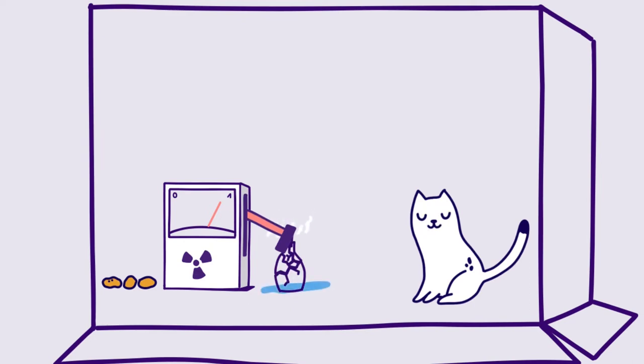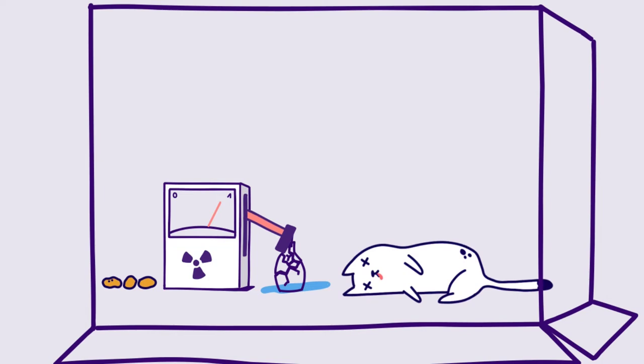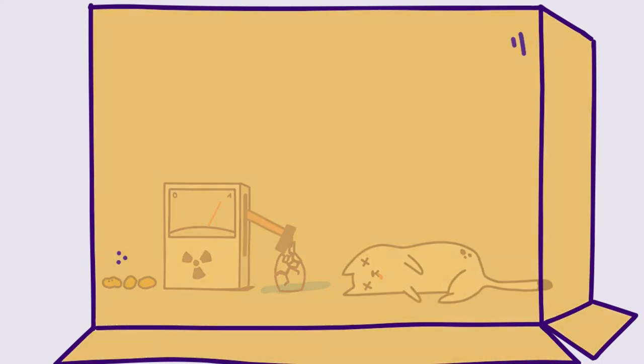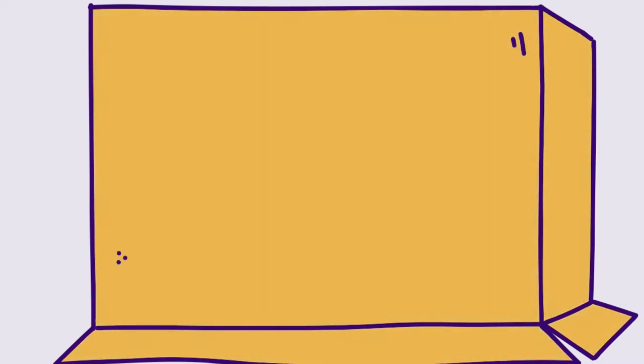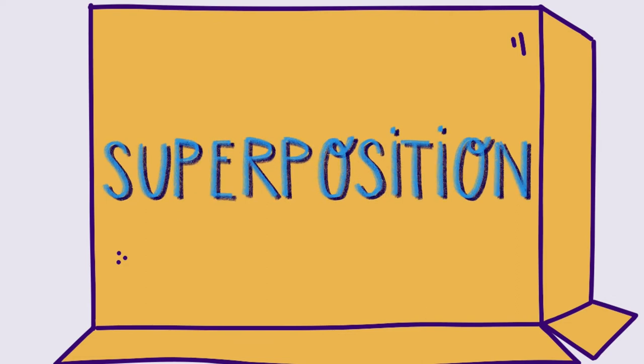You can already guess, the cat dies. As long as the box is not opened, the cat is in an overlapping state. In a way, it is dead and alive. This state is called superposition.